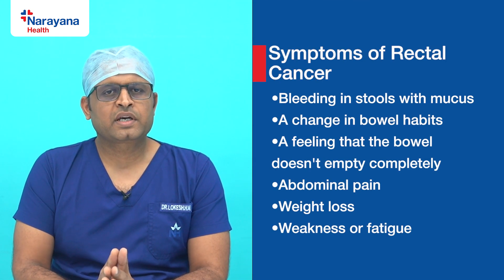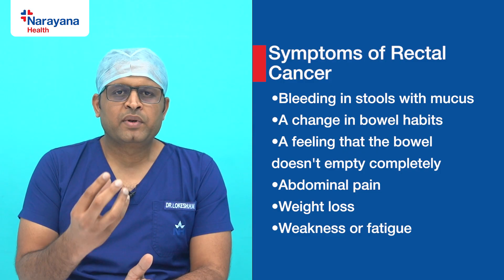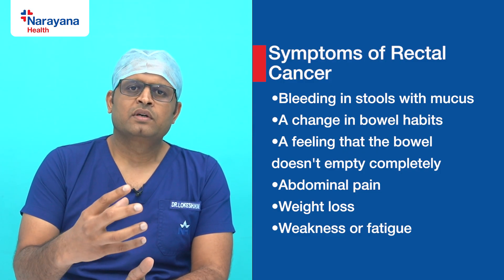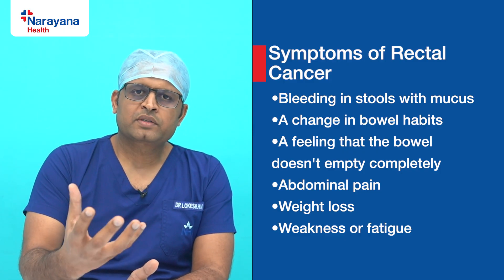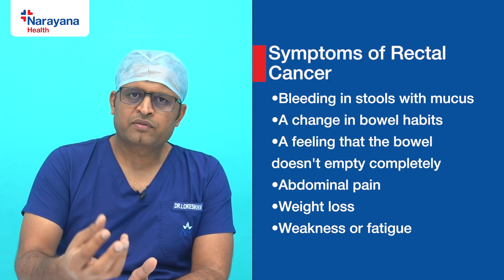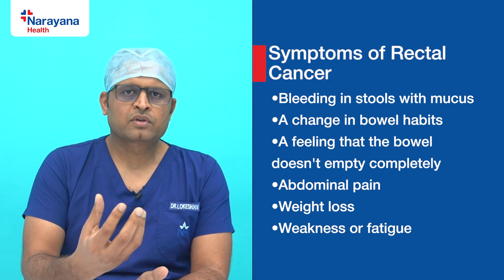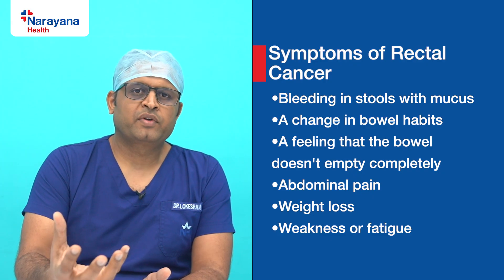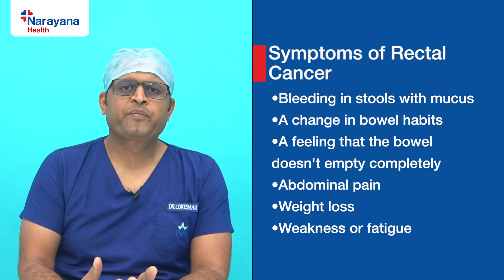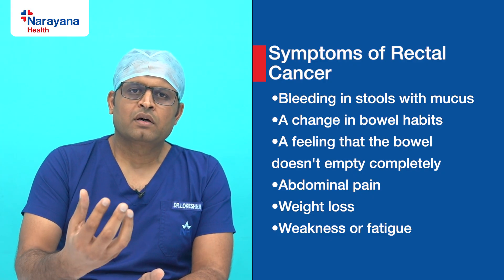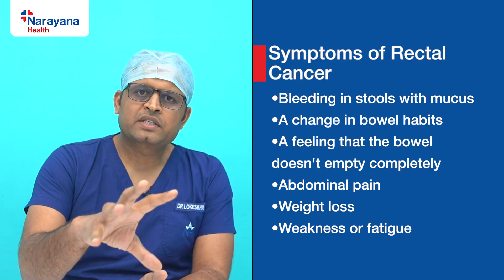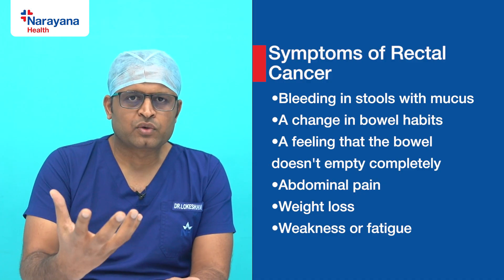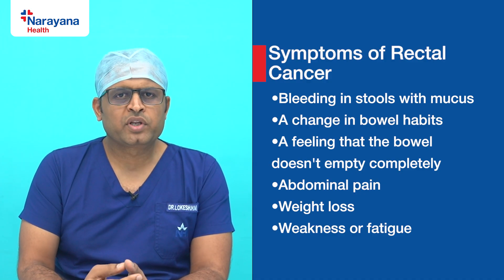Usually these patients present with bleeding while passing stools, associated with mucus — a jelly-type material in the stools. They will have increased frequency of stools, and sometimes they pass just mucus and blood itself without any stools. These are called spurious diarrhea.